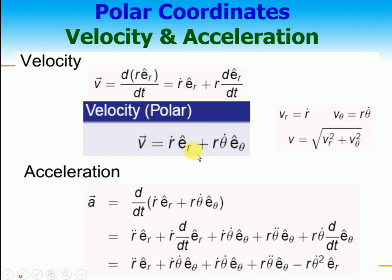We have already found that d(er)/dt = θ̇ · eθ. Substituting back into the velocity expression: v = ṙ · er + r · θ̇ · eθ. So the radial velocity component is vr = ṙ and the theta velocity component is vθ = r · θ̇. To find the total speed, take the square root of vr² + vθ².